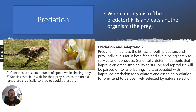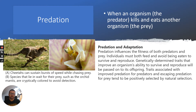So just a reminder: predation is when an organism, the predator, kills and eats another organism, the prey. Here I've got two examples. A is a cheetah, which can sustain bursts of speed while chasing prey, and B is an orchid mantis, a species that lies in wait for prey and is cryptically coloured to avoid detection. Predators are supremely adapted to capturing and eating prey. Likewise, prey are also trying to avoid being eaten to survive and reproduce. There's a constant survival of the fittest going on in terms of natural selection. Traits associated with improved predation or escaping predation tend to be positively selected.